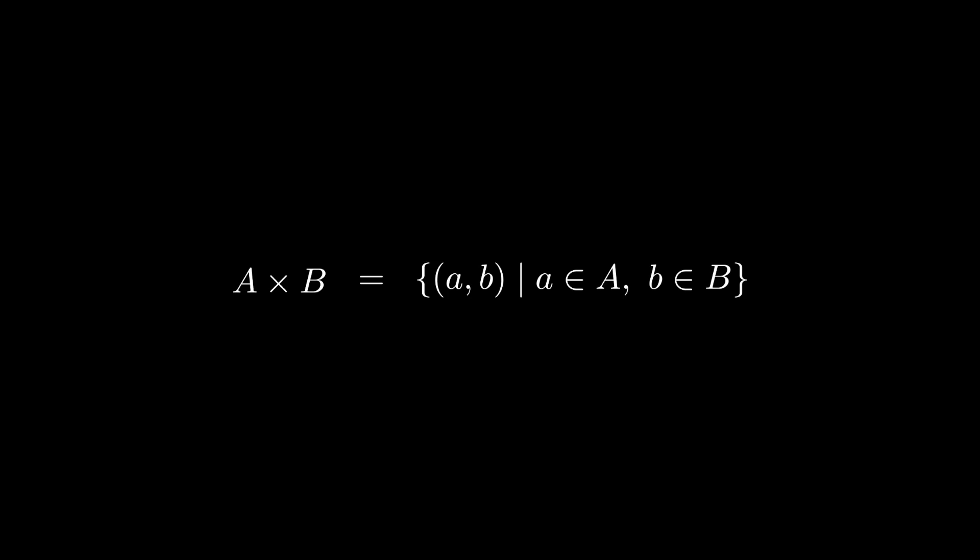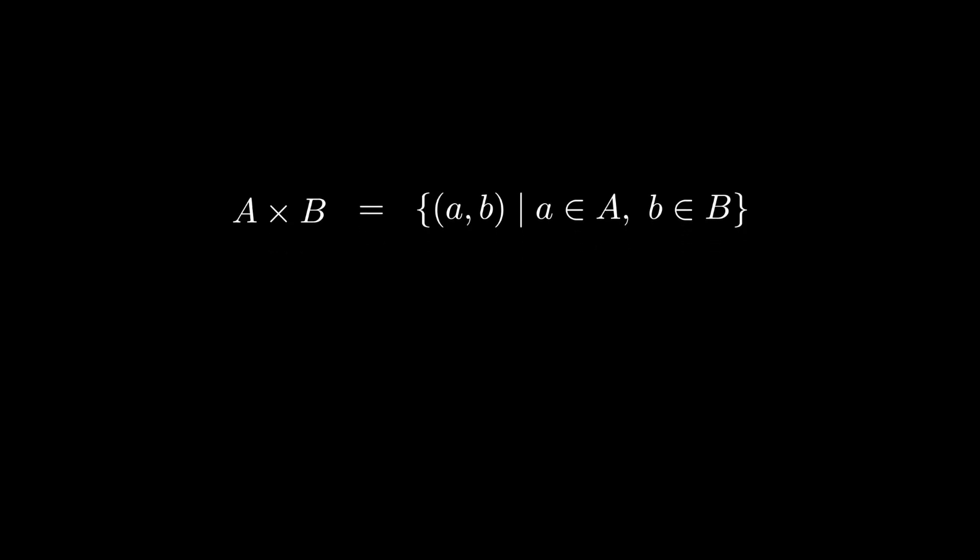You could say this is precisely the defining property of the Cartesian product of sets. From this, we can derive what functions of the form A cross B to C look like. For example, we could deduce that because elements of A cross B are by definition those of the form little a comma little b, to define f, it suffices to define f on the pairs little a comma little b.